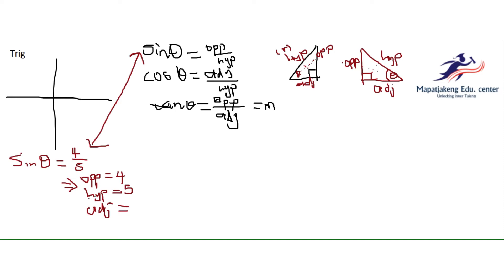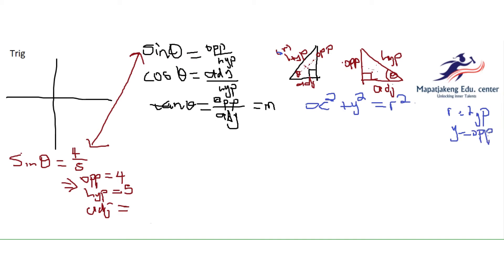How do we calculate the adjacent side? By Pythagoras, who says: x squared plus y squared equals r squared, where r means your hypotenuse side, y always means your opposite side, and x is what I call the adjacent. So we don't have x, which is our adjacent. We have y, which is our opposite: 4 squared, and we have r, which is 5 squared.